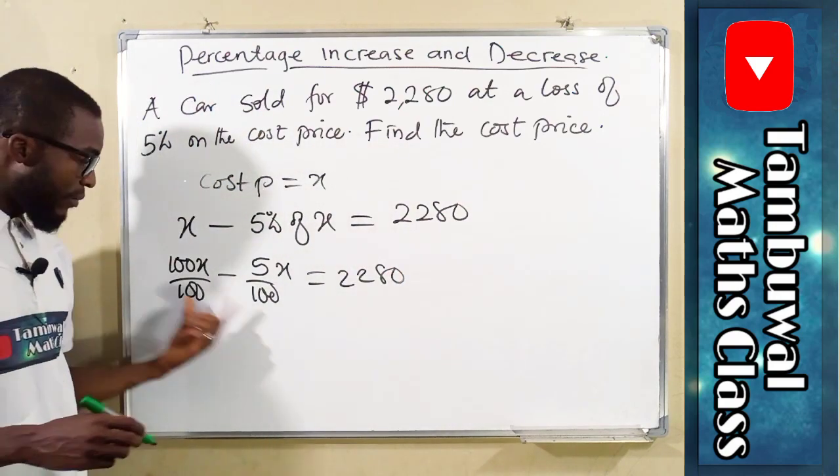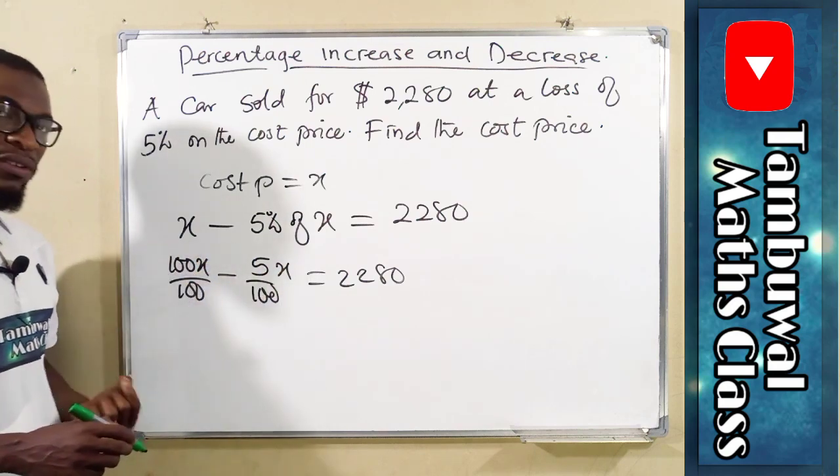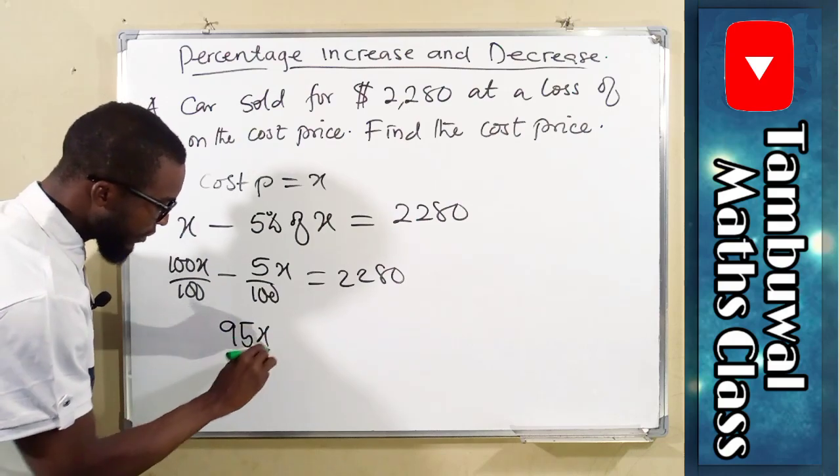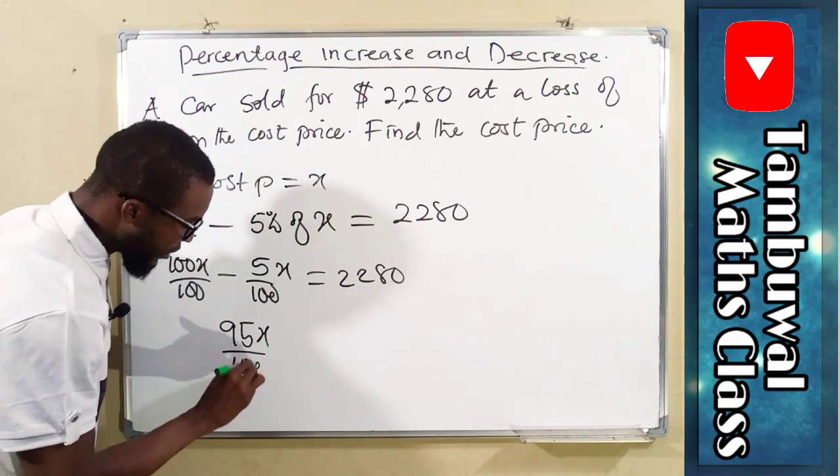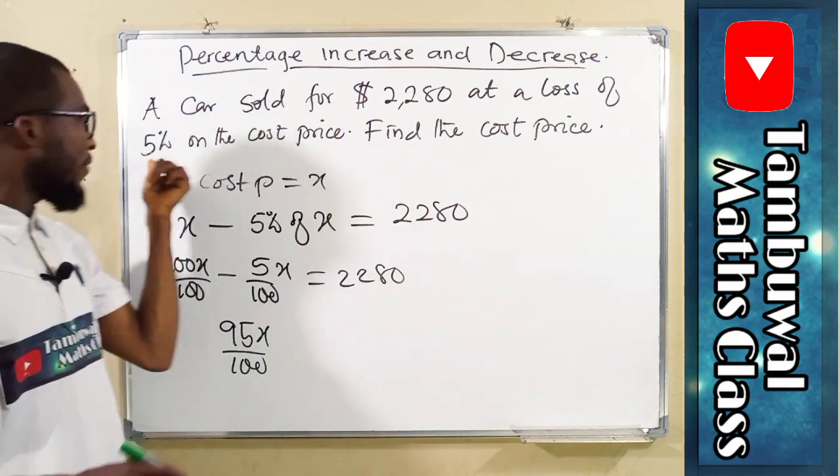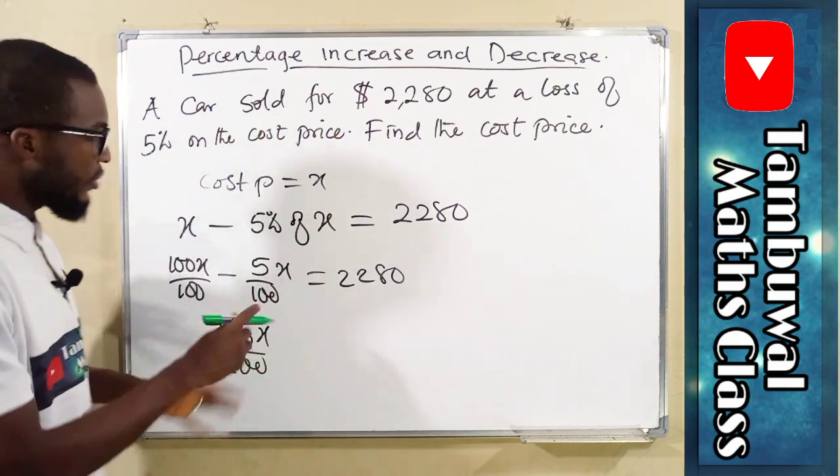The denominators are the same, so this minus this is equal to 95. We have 95x over 100. Remember this is percentage decrease: 100 minus 5 is the same thing as 95. This is just another approach.